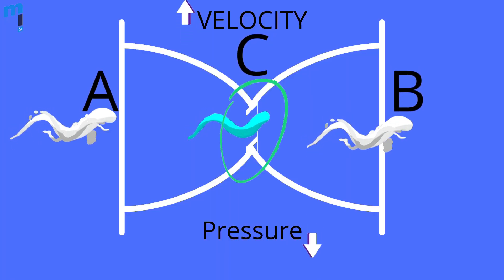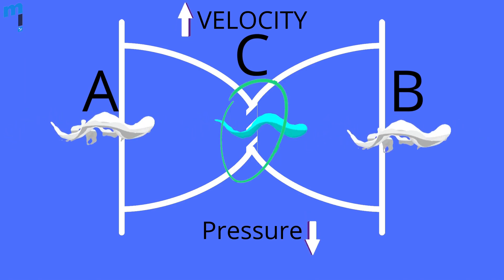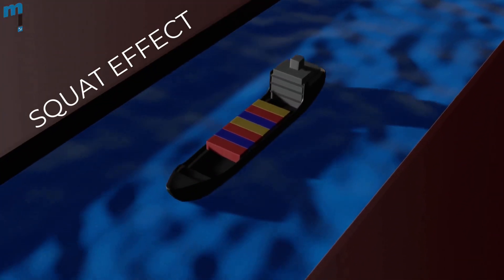Thus in our first experiment of the glass tube, the increased speed at constricted point C caused a decrease in pressure at that point. Without going into any more mathematical complexities, let us now first understand the squat effect.